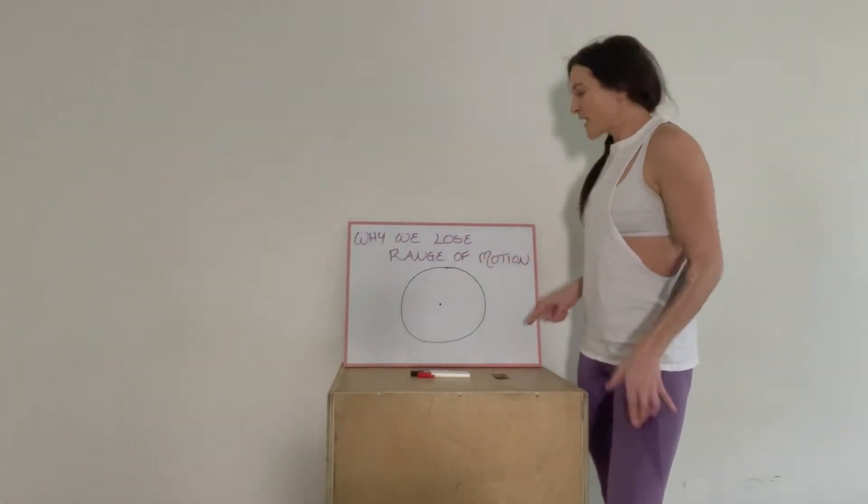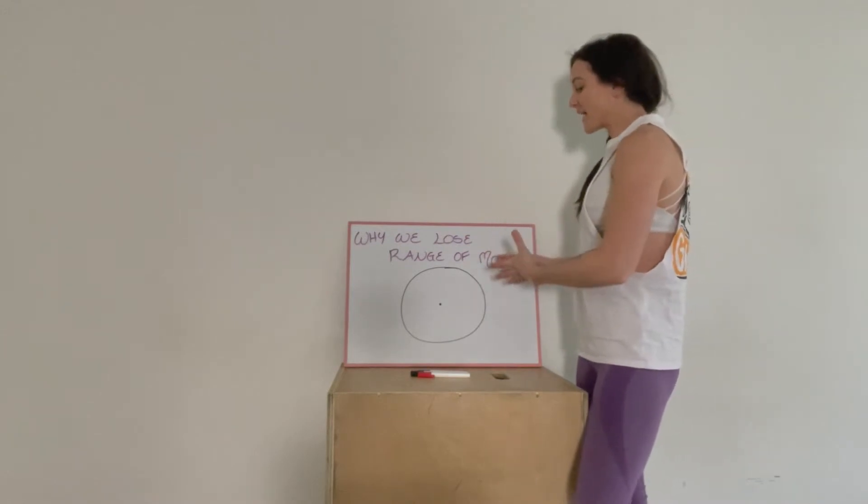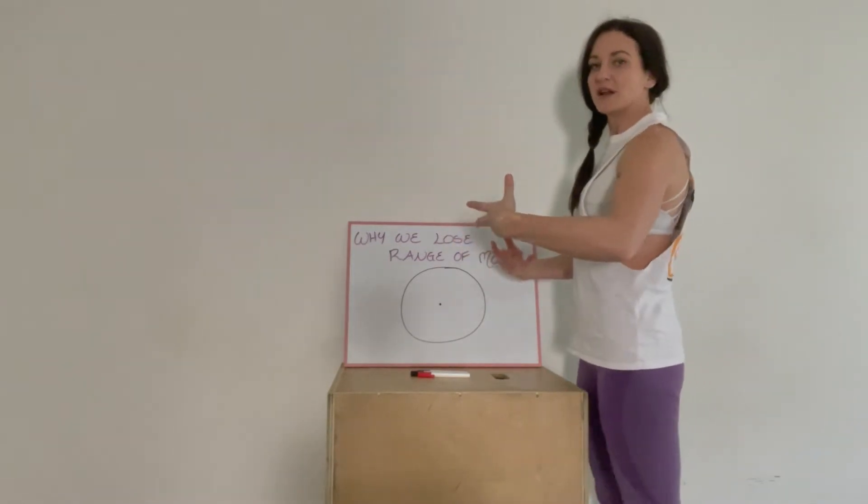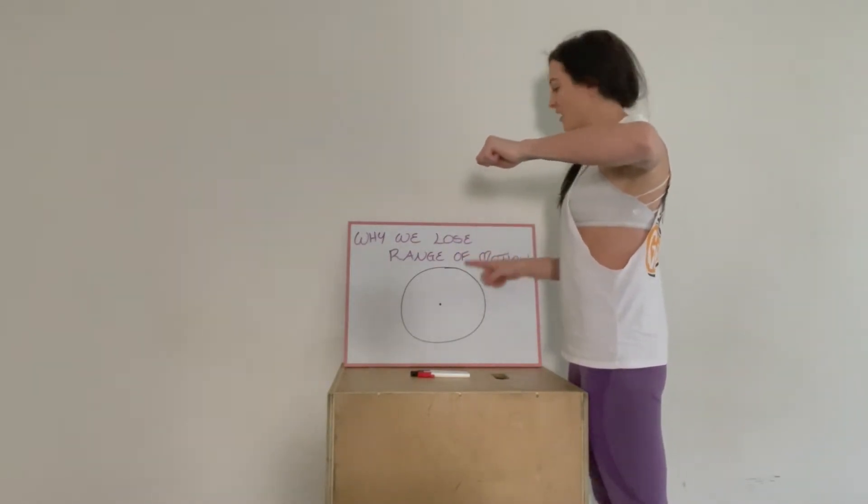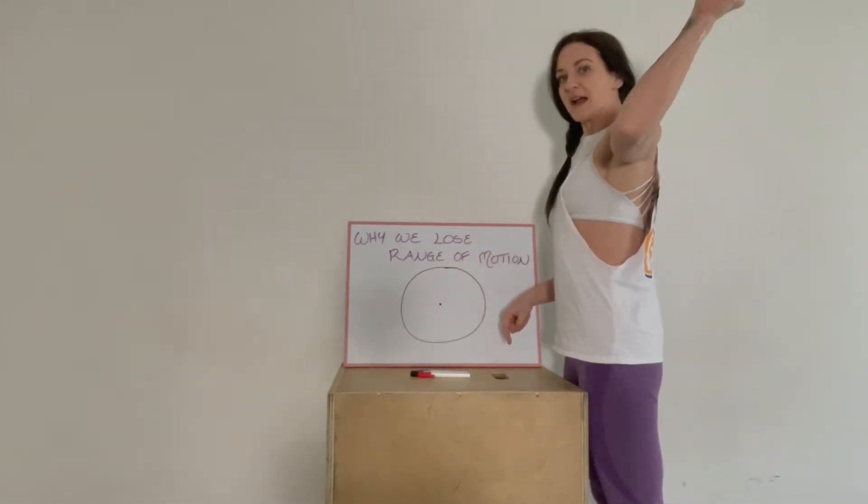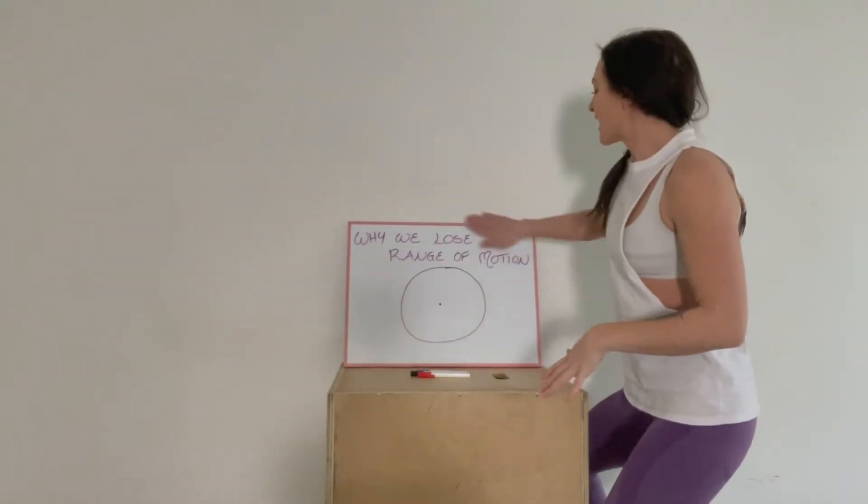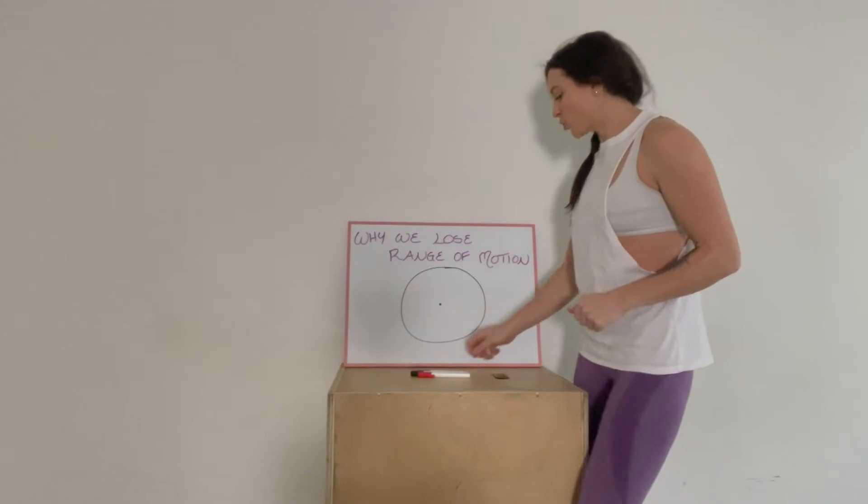So let's talk about how this works. This big circle here with the dot in the middle, this is going to represent our entire range of motion in one joint. Let's say it's our shoulder. Let's say this circle represents how far can we go into external rotation, how far can we go into internal rotation. That is my entire range of motion in my shoulder.